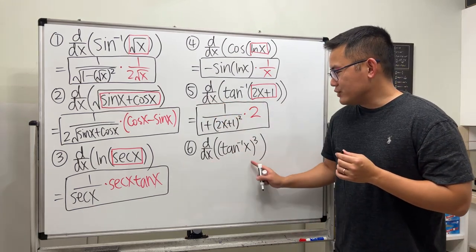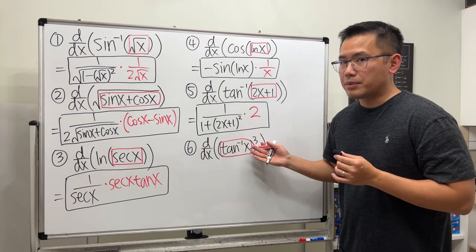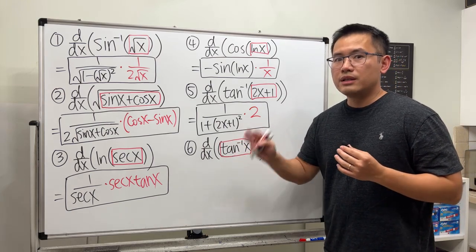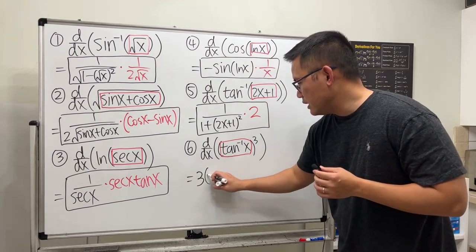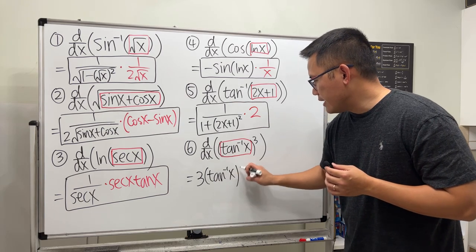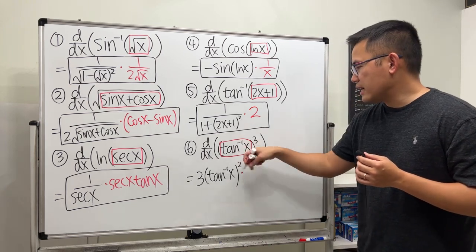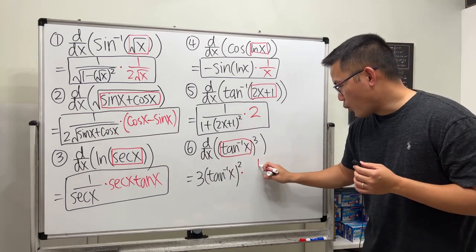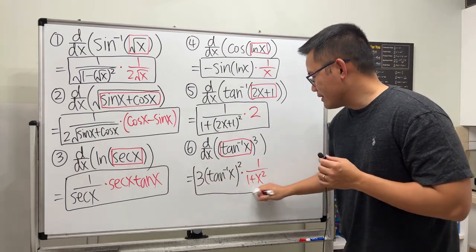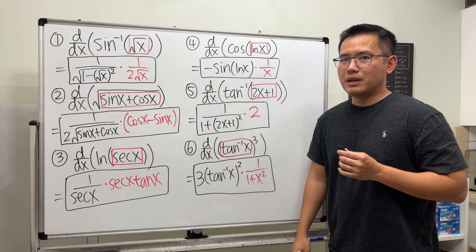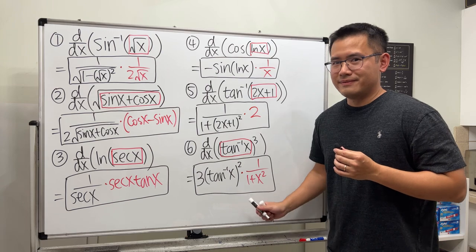Lastly, we are differentiating inverse tangent in parentheses raised to the third power. The big picture is we have a box to the third power — differentiate that and we get 3 box squared. That's the first part: 3 times inverse tangent squared. Then use the chain rule — multiply by the derivative of the inside, which is 1 over 1 plus x squared. That's it, and hopefully you find this video helpful if you are doing derivatives for the first time.